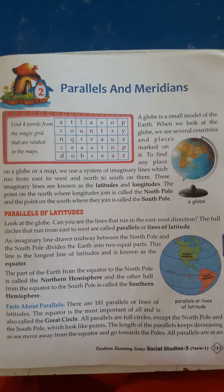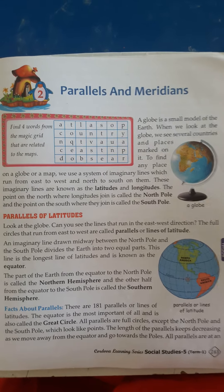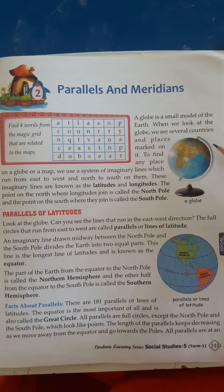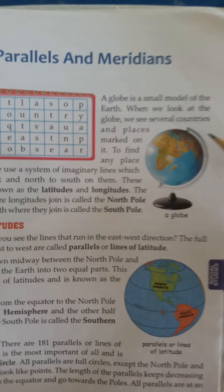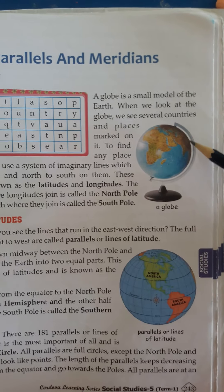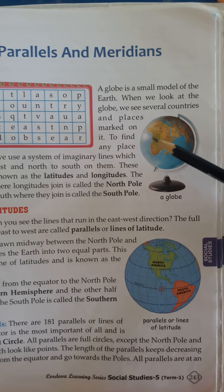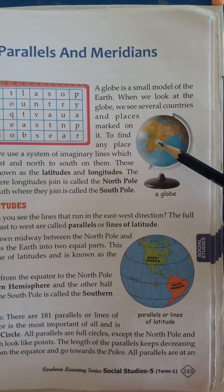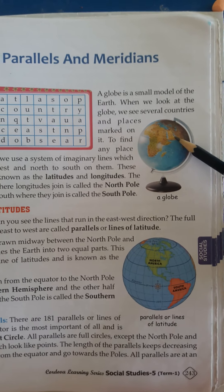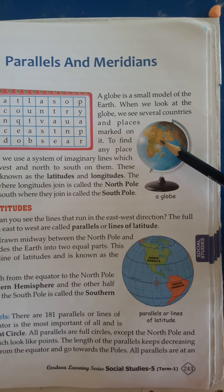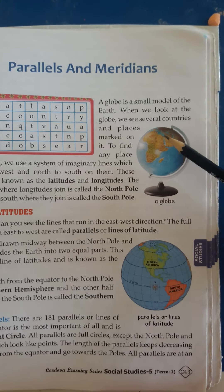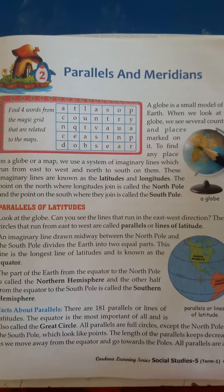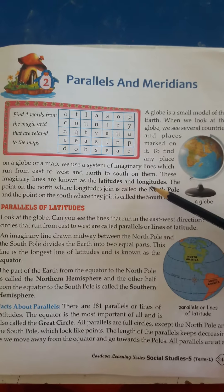In this lesson, a globe is a small model of the earth. Here you can see a structure of a globe which is considered as the small model of earth. When we see on this globe, you can see several countries and places are actually marked on it. To find any place, you need a system of imaginary lines. They are known as latitudes and longitudes.